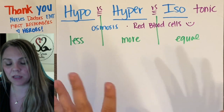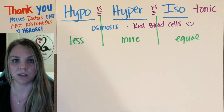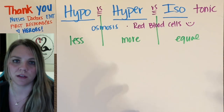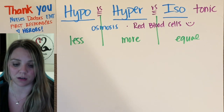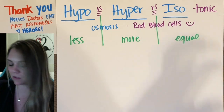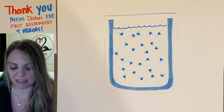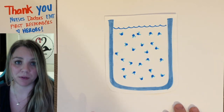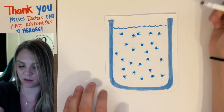This always has to be in relation to something else. You can't just say you have one solution and it's hypertonic — hypertonic in relationship to what? You always have two different things in play when dealing with hypotonic, hypertonic, and isotonic solutions. Typically, when we talk about these, we're talking about red blood cells.